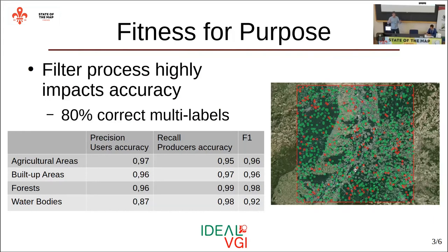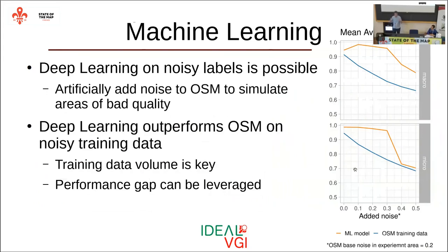How can this information be fed back to the community? The goal of the study is machine learning — predicting labels automatically on remote sensing data with a model. Machine learning models normally expect clean labels, so having 20% wrong labels is a concern. However, TU Berlin applied these models with OSM data and the model still outperforms OpenStreetMap. They artificially deteriorated OSM to simulate lower-quality areas, and the model still performed well up to a very high amount of wrong labels. As long as there are enough labels, a good machine learning model can be trained.